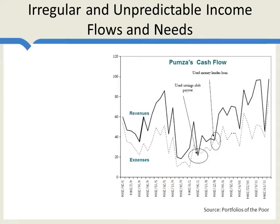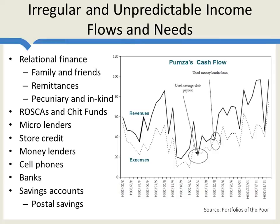Pumsa, in fact, belongs to eight different savings clubs. As with many of the other people portrayed in Portfolios of the Poor, she uses the financial system a lot in different ways. There is relational finance — they borrow and lend to family and friends. There are remittances, both from abroad and from other parts of the country. There is borrowing and lending in money but also in-kind; people will borrow a cup of rice from fellow villagers or from people who live nearby in the slum. They use ROSCAs and chit funds — rotating savings and credit associations — which is one of these savings clubs.